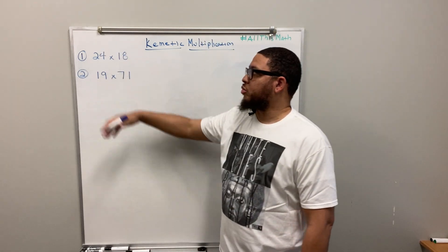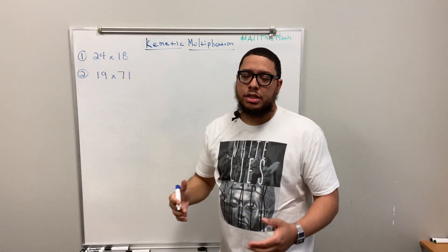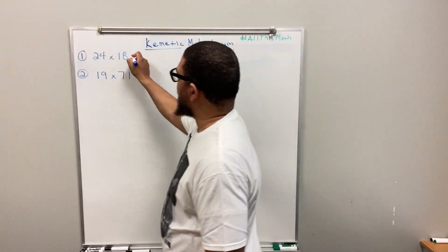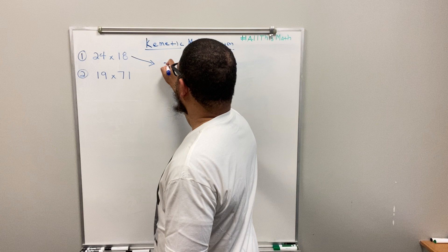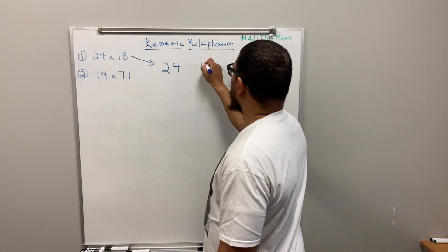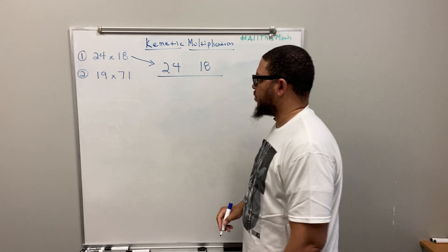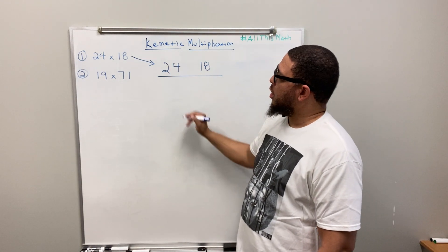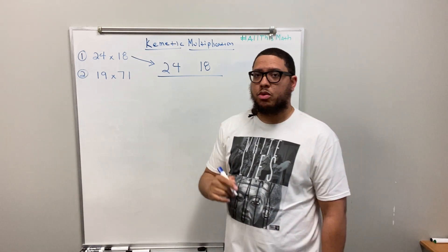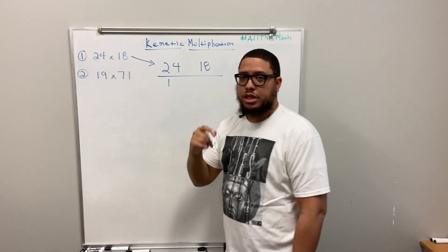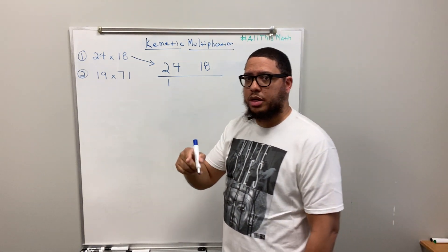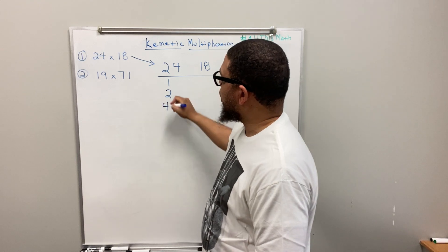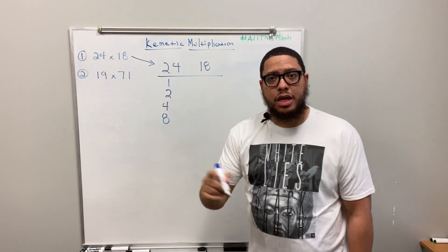I have two examples up here. Example one: 24 times 18. The Kemetic multiplication method is based on doubling — it's a system of doubling. We write 24 as one factor and 18 as the other, and draw a horizontal line underneath. In column one, under 24, we start with the number 1 and keep doubling: 1 becomes 2, 2 becomes 4, 4 becomes 8, 8 becomes 16.